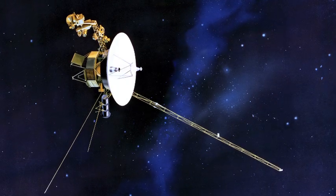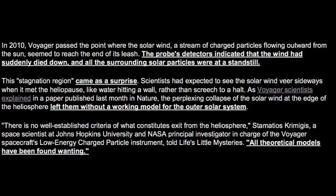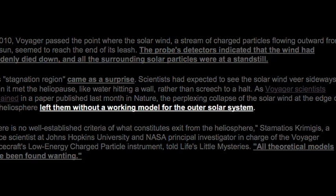According to a new report, the latest data from the NASA space probe Voyager 1 has left scientists without a working model for the outer solar system.